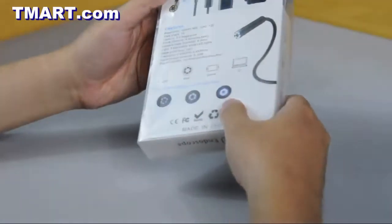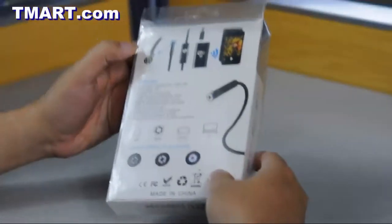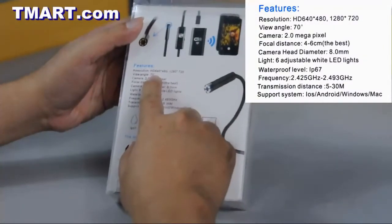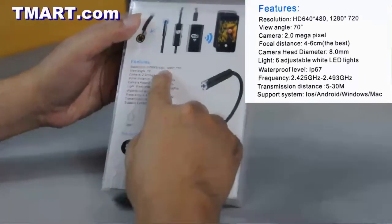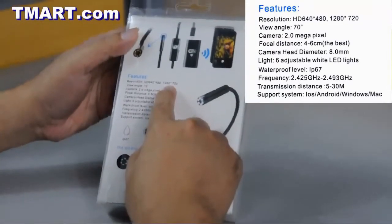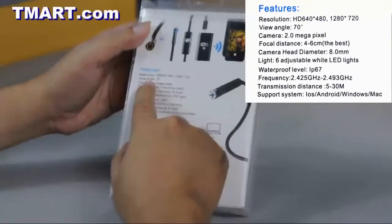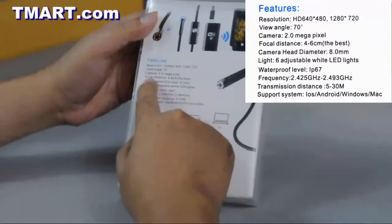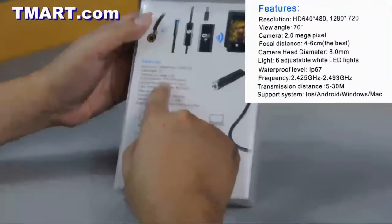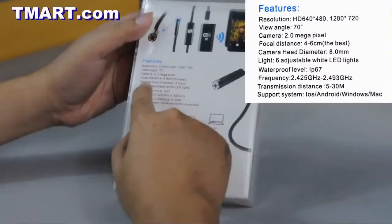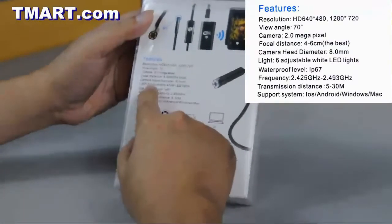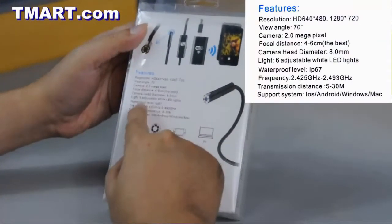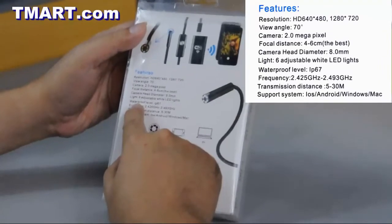On the back of the box is a list of its features. As you can see the resolution of the camera is 640 by 480 and can be upscaled to 720p. The view angle of the camera is 70 degrees. The optimal focal distance of the camera is 4 to 6 centimeters. This model also comes with 6 adjustable white LED lights. And the camera itself is IP67 waterproof.